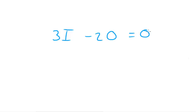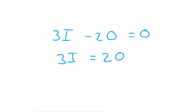If we move the 2O to the other side, we get: 3i equals 2O. When solving to find the formula, we're essentially finding the empirical formula, so we're looking for the lowest numbers. We need to make this equation work by finding the lowest common multiple of three and two, and then multiply by that so that the equation is satisfied.